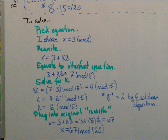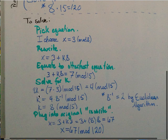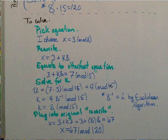And then we equate to the other equation. So we have 3 plus k8 equals 7 mod 15, since both these sides are equal to x. Then we solve for k, so we move the 3 over, so 7 minus 3 mod 15 equals 4 mod 15, and then divide both sides by 8, so 8 inverse. I calculated that 8 inverse equals 2 by the Euclidean algorithm. So 4 times 2 equals 8, so k equals 8 mod 15.